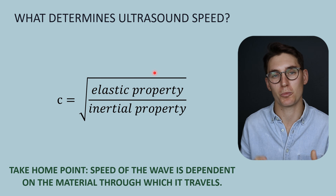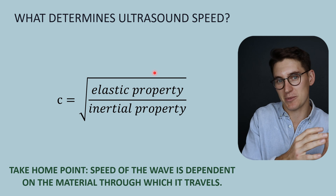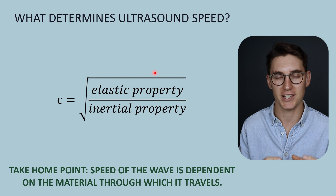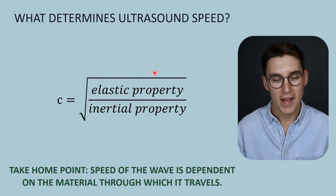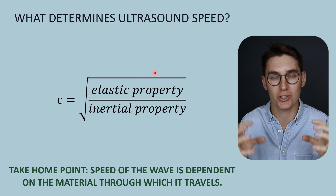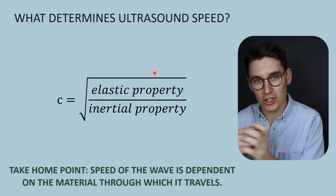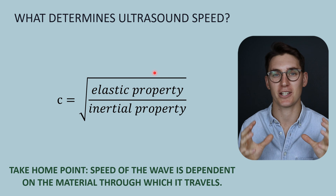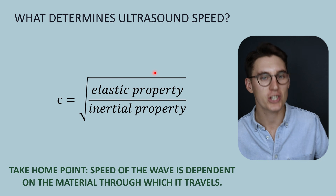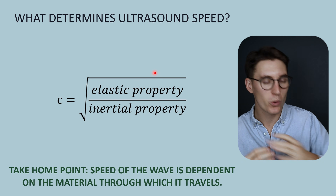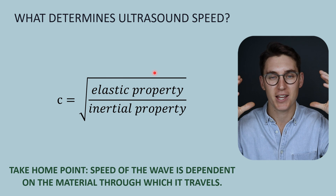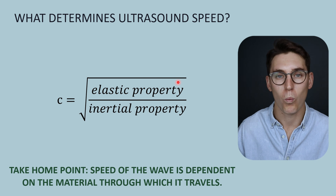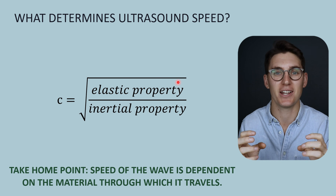The second property is the inertial property. Inertia describes the amount of force required to move those units within the tissue, and it is represented by the density of the tissue. The more dense a tissue, the more tightly packed the units, the more inertia that tissue has. People often think the denser a tissue, the faster sound will travel — but that's actually because of the elastic properties. Water is less compressible and stiffer than air.